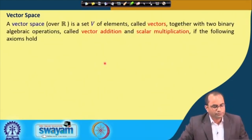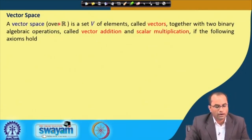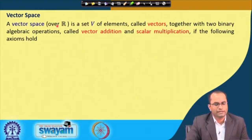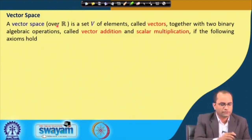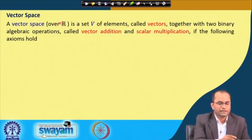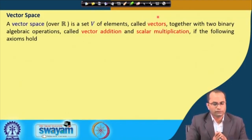Vector spaces are these special sets. A vector space needs to be defined over R. This R can be more general — like the set of complex numbers or, more generally, a field — but we will mostly take the vector space over R. This set V together with another set, the set of real numbers R, must be associated. The vector space is a set V whose elements are called vectors.